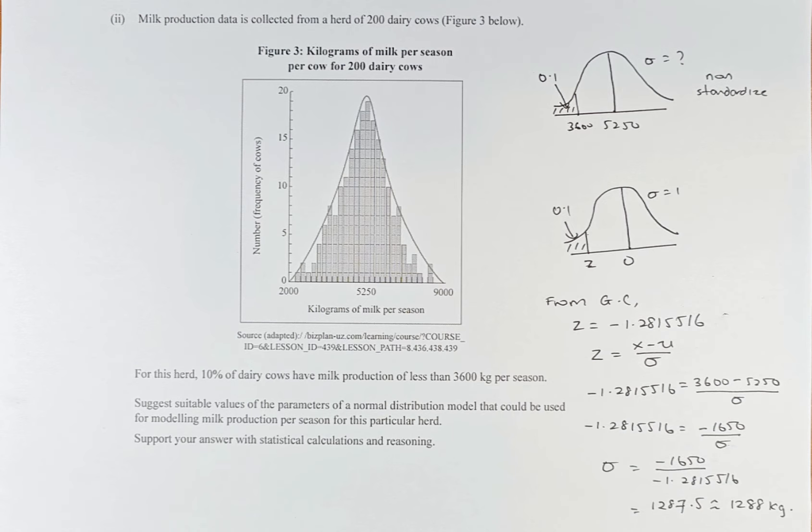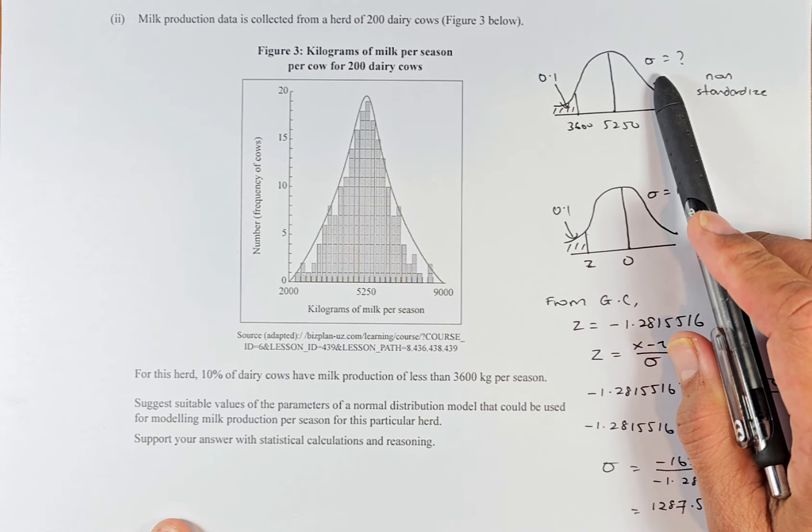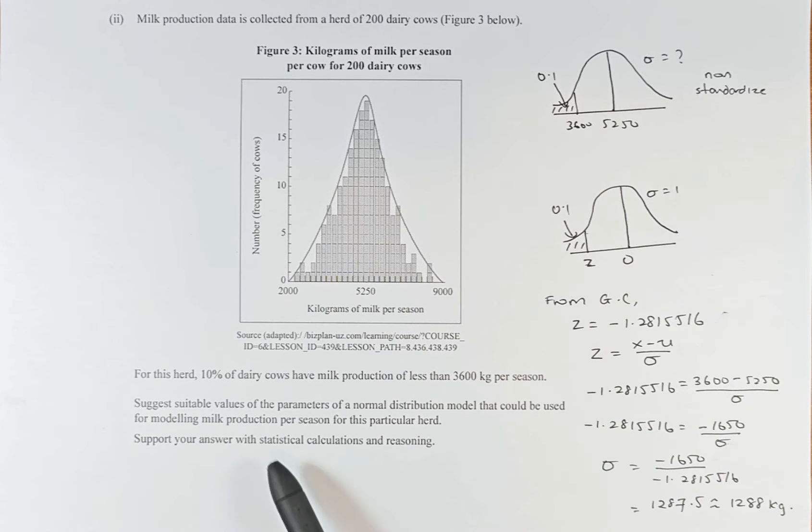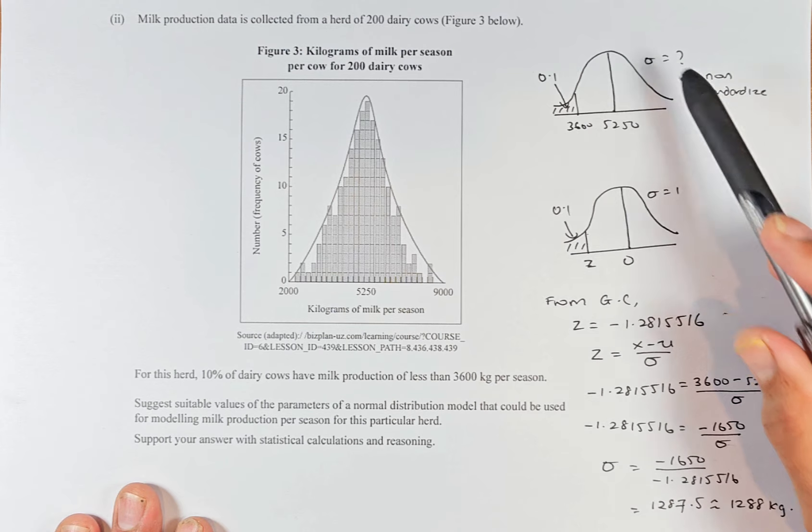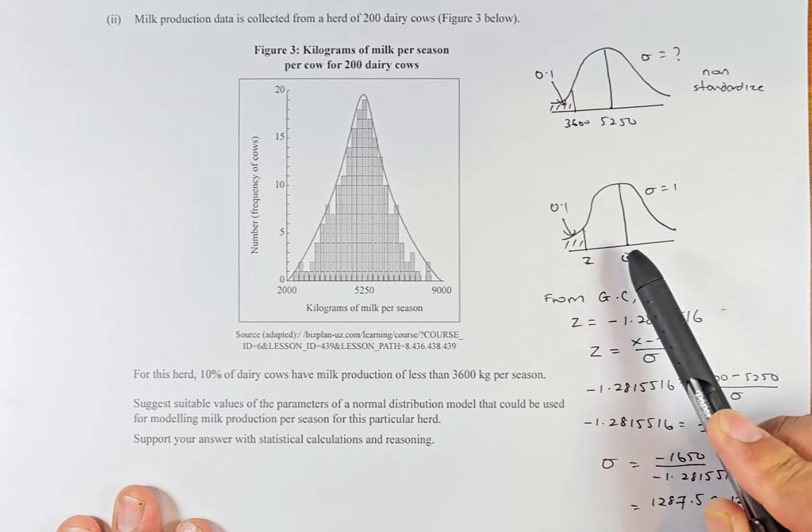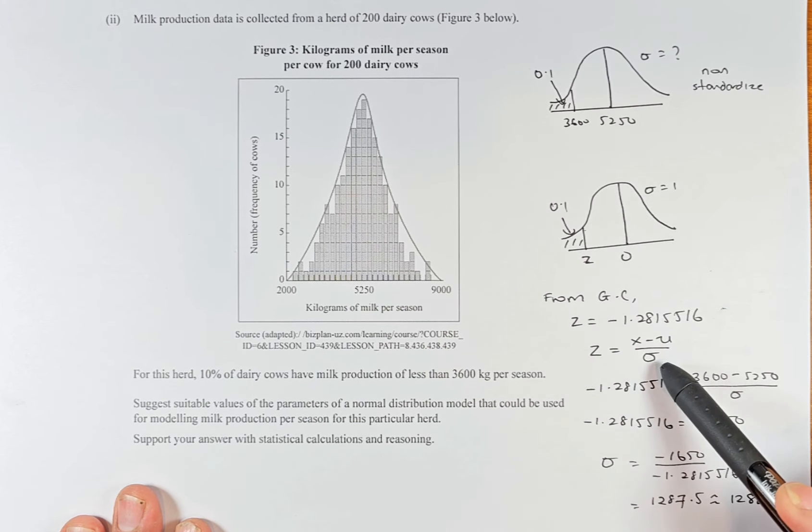We are going to do inverse normal because we need to calculate the standard deviation. In other words, we need to calculate the mean and the standard deviation. The mean is found, 5250, and we are going to calculate the second parameter, which is the standard deviation. To calculate standard deviation, we need to do the inverse normal, and we need to standardize it first. So to standardize this graph, the standard deviation becomes 1 and the mean becomes 0. Then we need to calculate the z. Once we found the z, we're going to use this formula: x minus mu over sigma equals z and solve for your sigma.